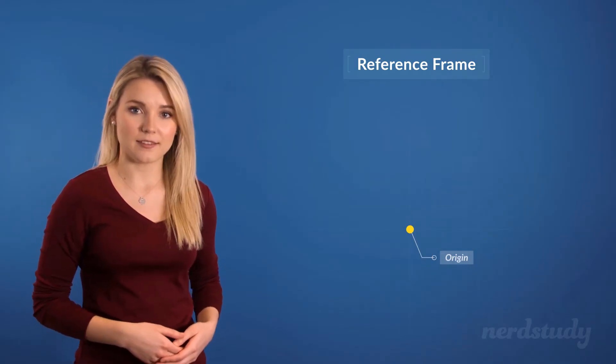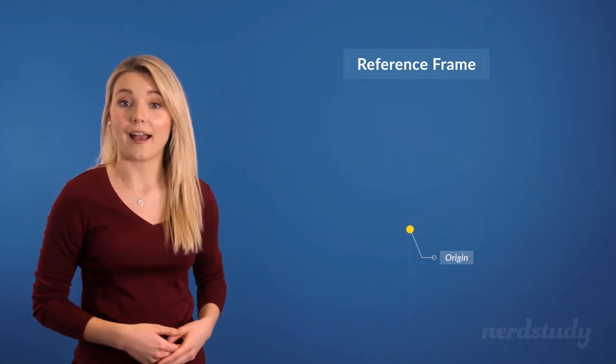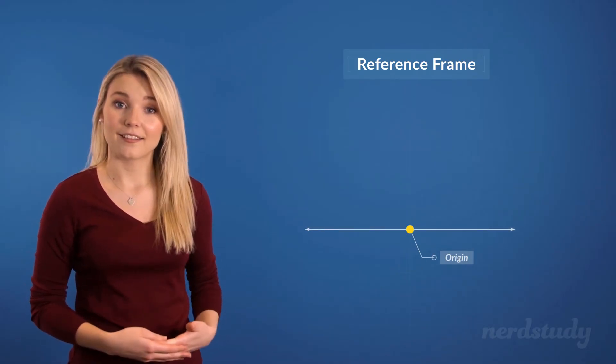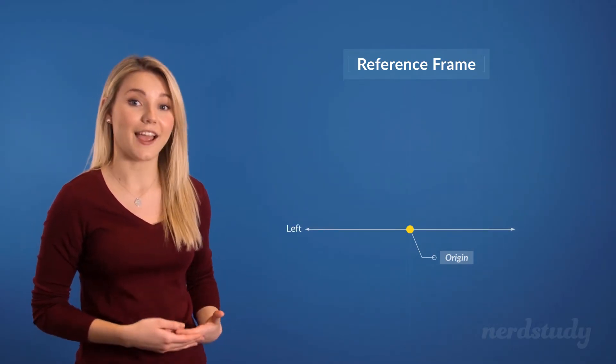In a one-dimensional space it's simple to define coordinate axes, because we only need one. And look, now we can talk about left and right.